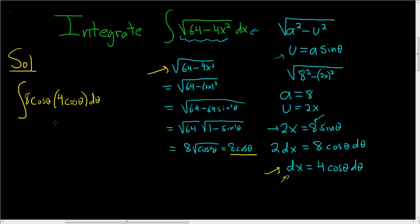So we end up with 4 times 8 is 32. And then here we get cosine squared theta d theta.